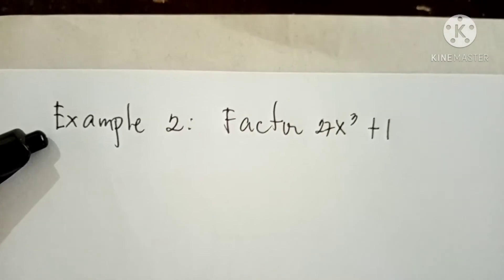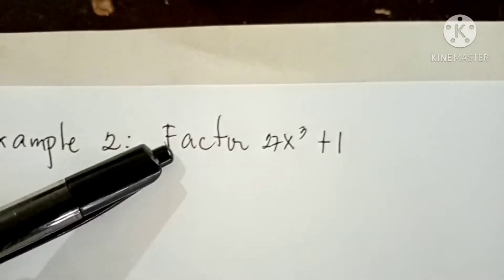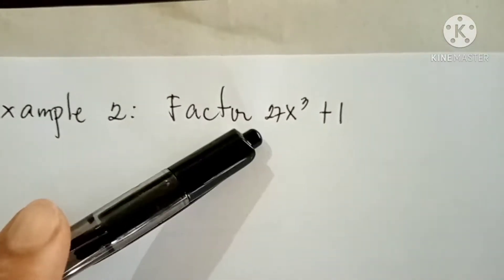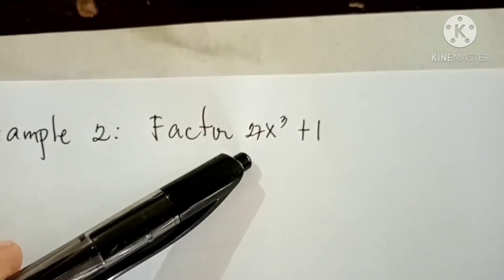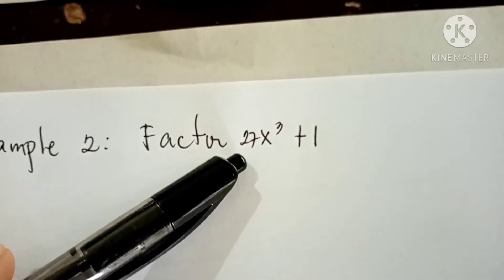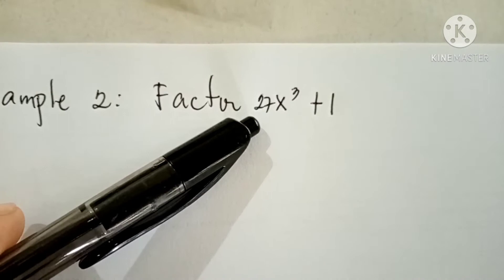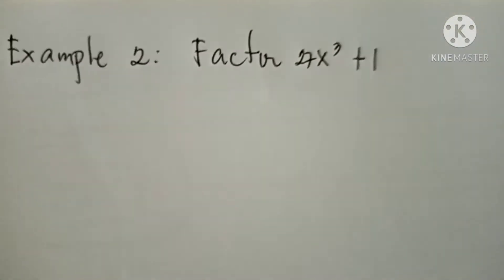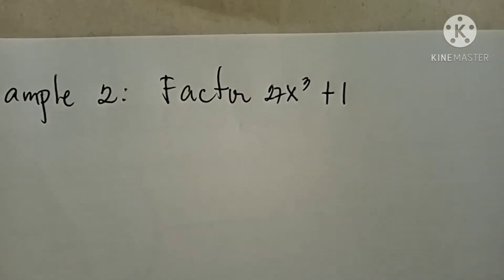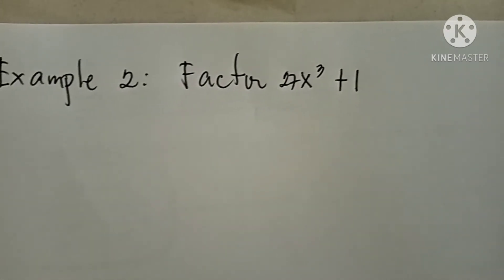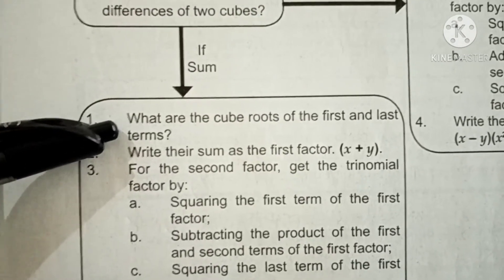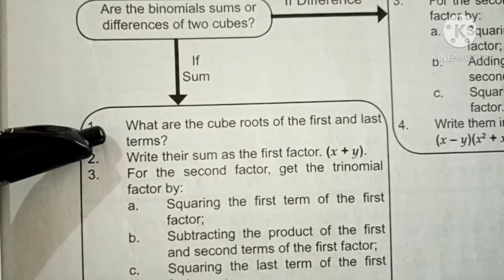Now we're going to proceed to Example 2. Factor 27x cubed plus 1. As you can see, this is no longer a difference of two cubes — it has a plus sign, so this is the sum of two cubes. There is a small difference in the method. Before we start factoring, let us review. For the first step: what are the cube roots of the first and last term?